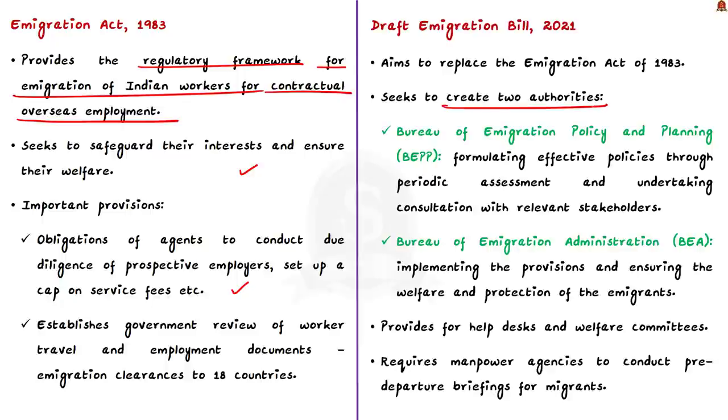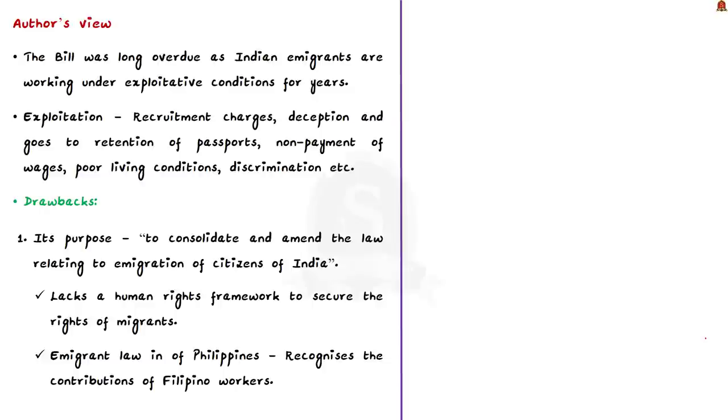This new bill is different in many aspects. Mainly it aims to create two authorities. First is the Bureau of Immigration Policy and Planning which would formulate effective policies through periodic assessment and undertake consultation with relevant stakeholders. The role of Bureau of Immigration Administration is to implement the provisions of the Act and ensure welfare and protection of immigrants. The bill also provides for help desks and welfare committees. It requires manpower agencies to conduct pre-departure briefings for migrants. Overall the bill aims to increase accountability of brokers and other intermediaries involved in hiring of labors.